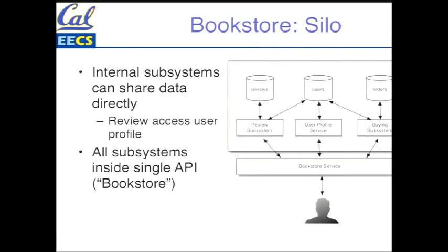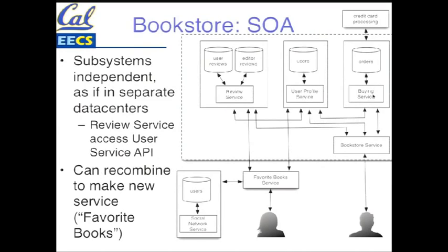To make it more clear what a service-oriented architecture is, here's an example from the book. This is a monolithic one — there's a bookstore service, these things can do direct reads from each other's data, invoke each other, but the user has to go through a single API of the book service. What would a service-oriented architecture look like? These three things are separate systems: the review service, the user profile service, the buying service. You can plug in another service that wasn't originally part of it — credit card processing. And because every internal component is a service, you can create another app that's a simple extension — a favorite book service that uses some of the same services, and also plugs into a social networking service. You can get a group's favorite books by combining these components.